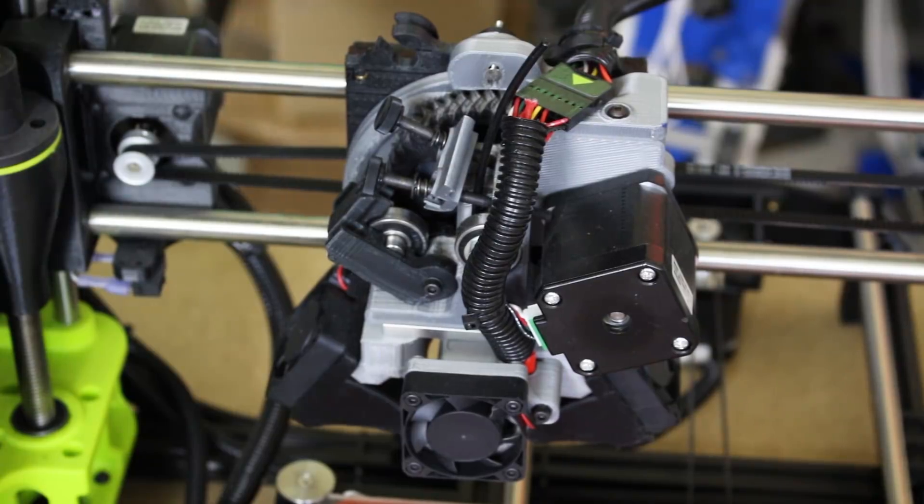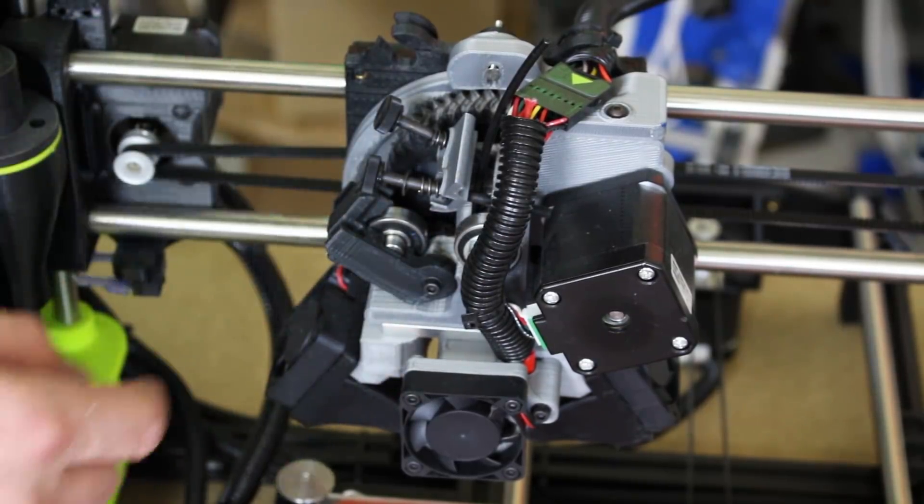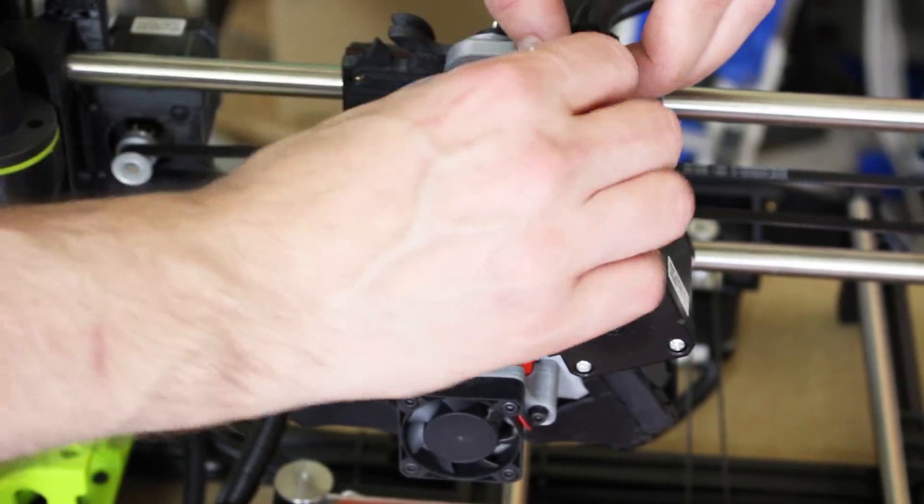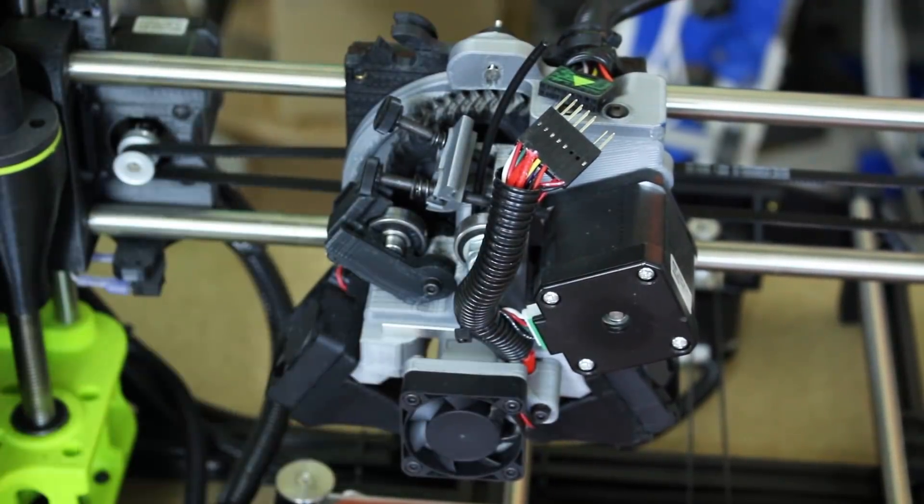So we're fitting the V3 Dual onto a Lulzbot TAZ-6, and it currently actually has the Moarstruder tool head fitted. Now all of these Lulzbot tool heads, we just have a connector there and one screw that holds it on, and then we can just take that off and put on another tool head.